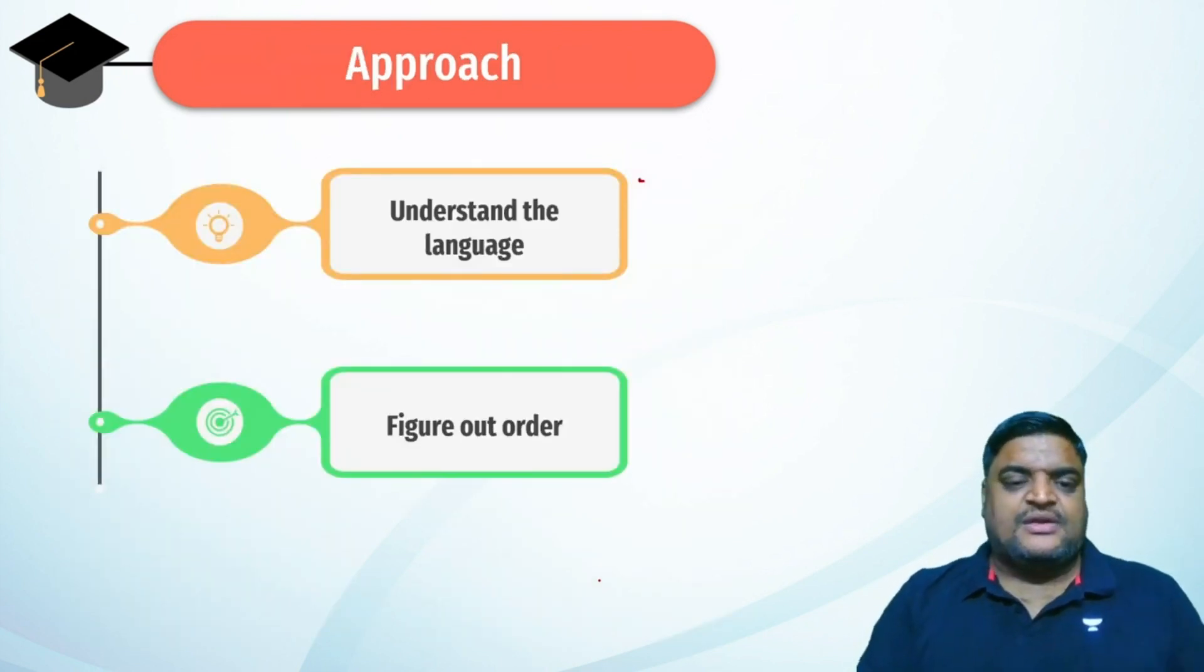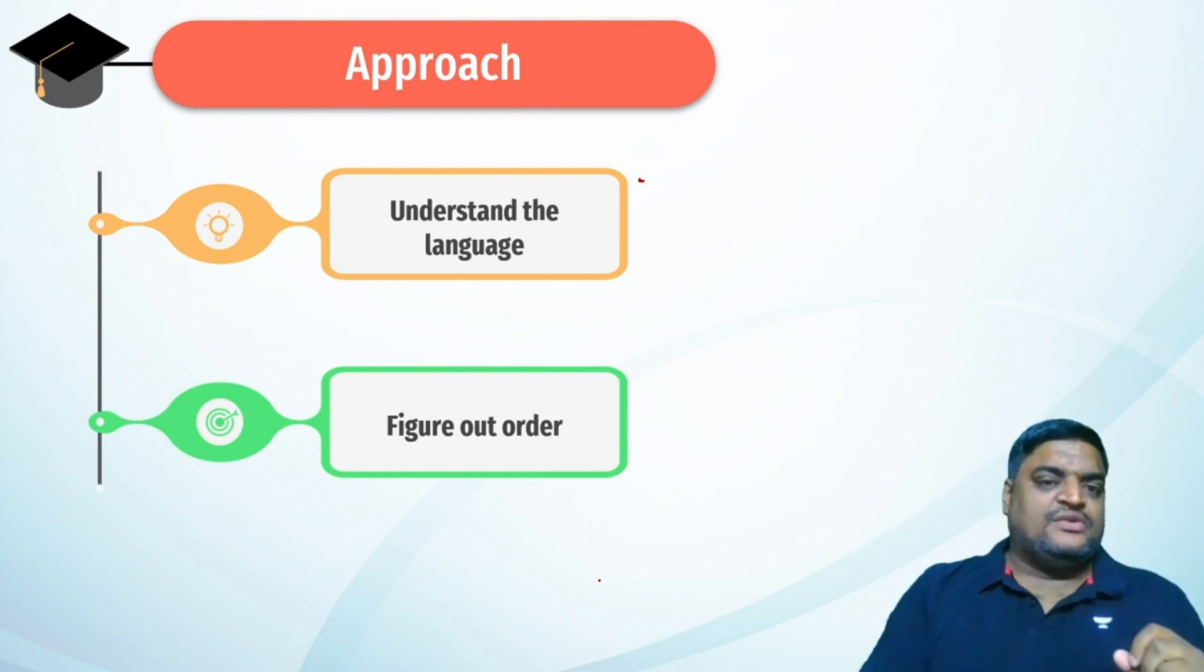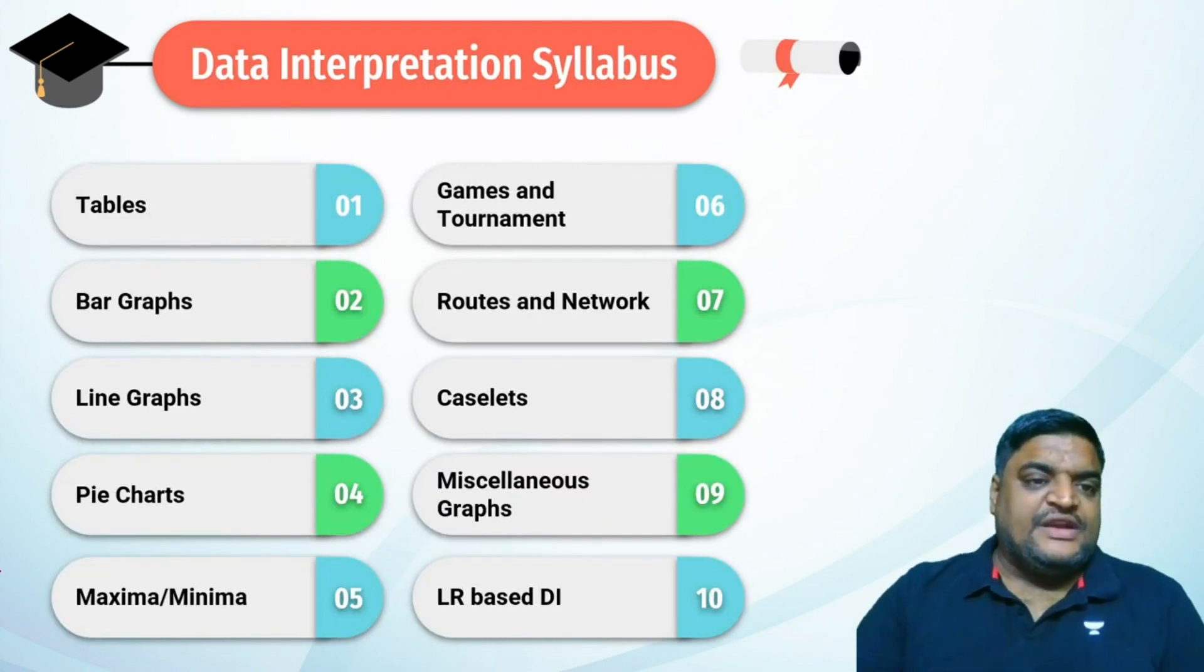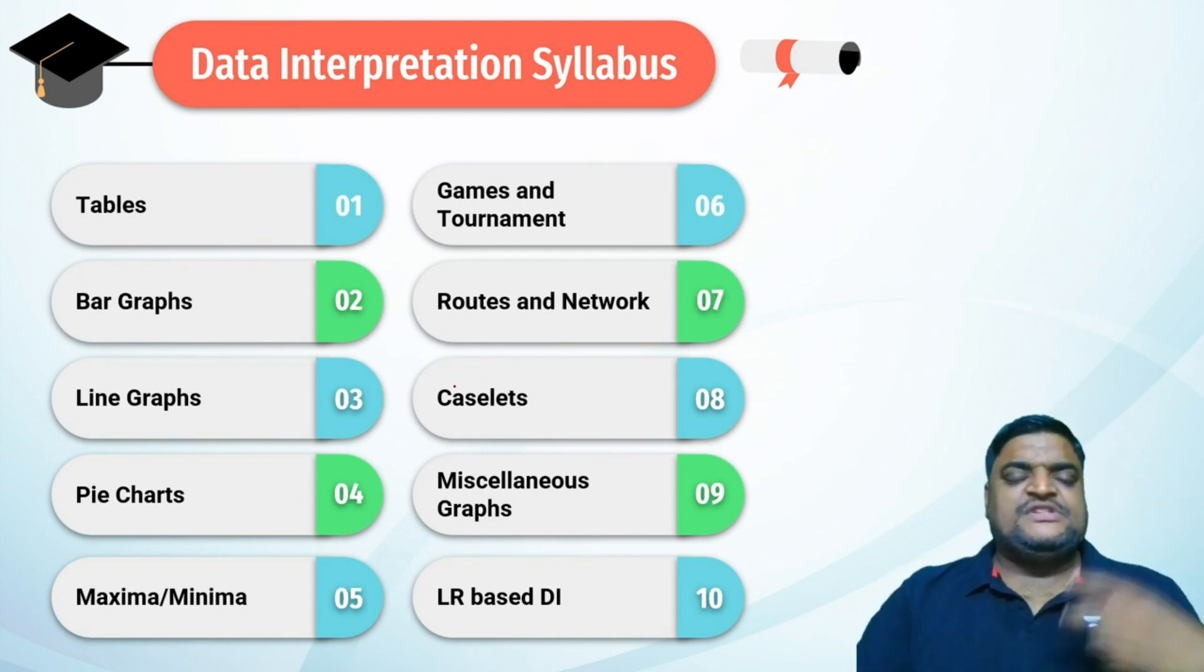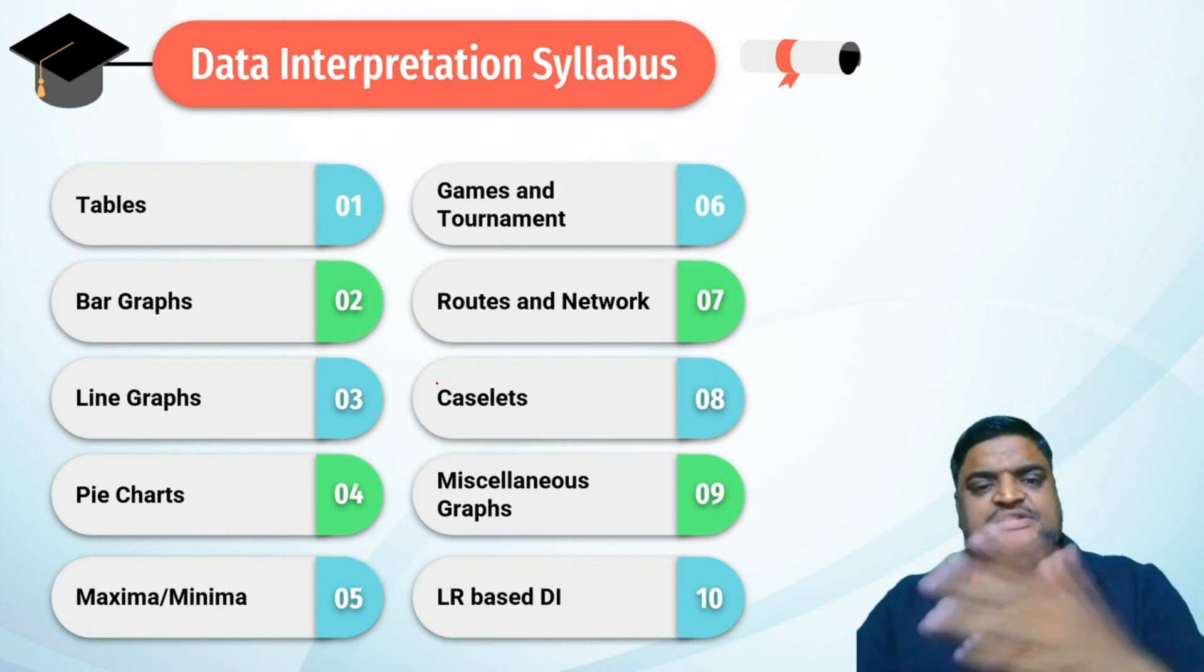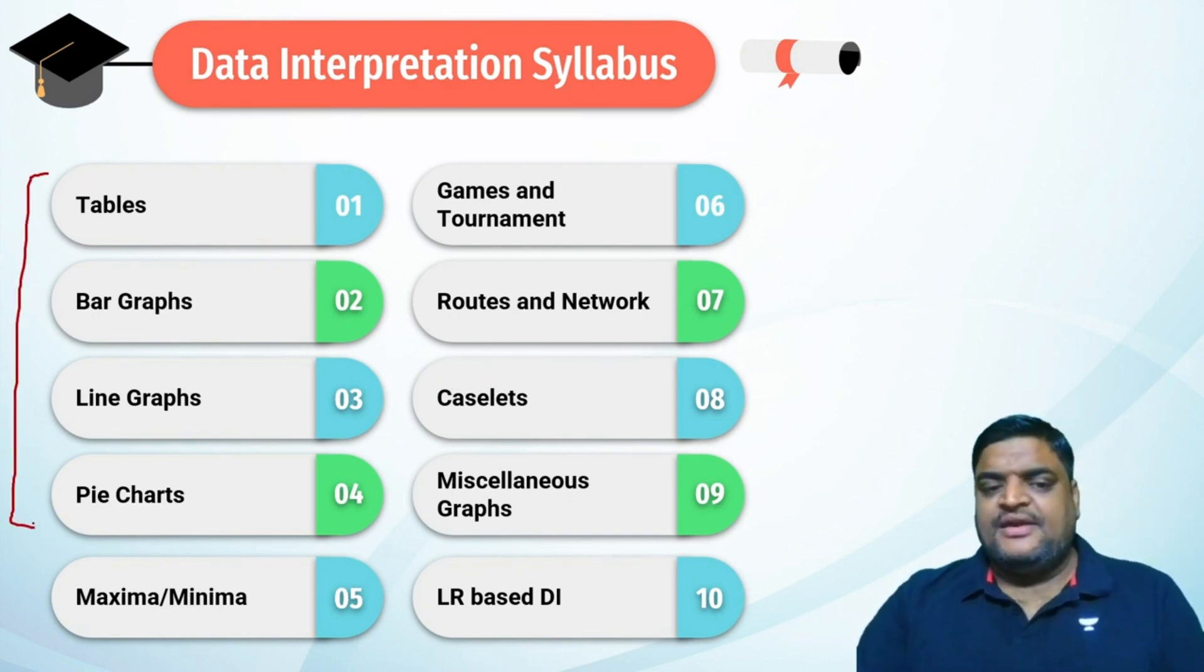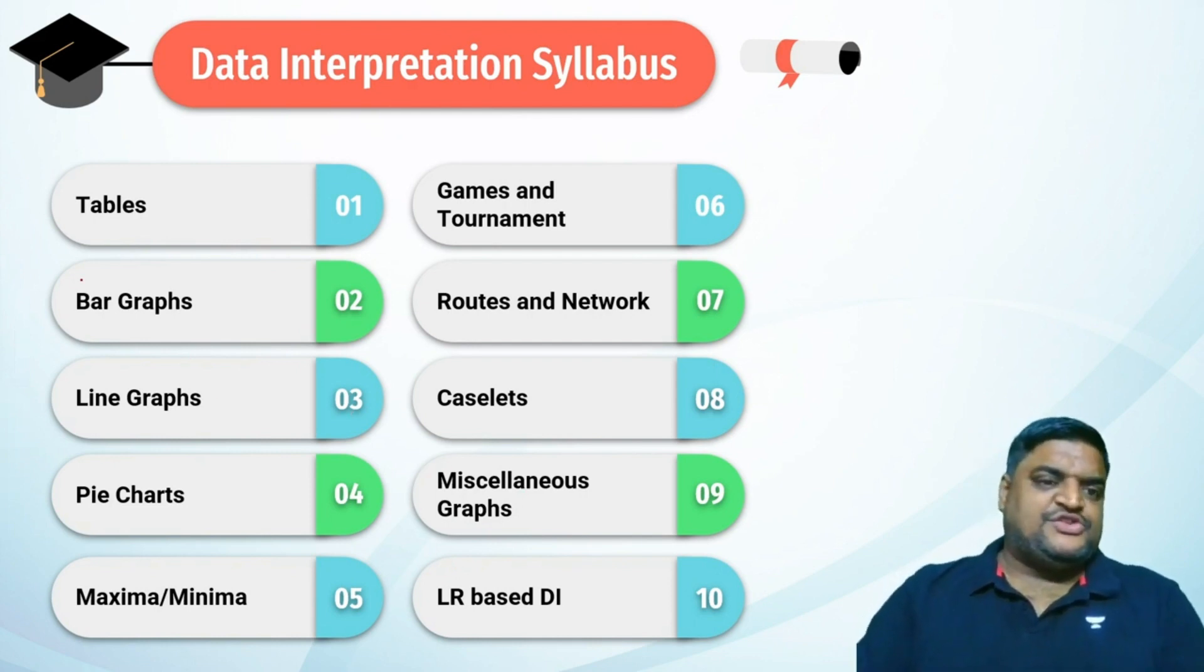Moving ahead, data interpretation has the same problem - syllabus is unknown. The syllabus is mainly divided into two parts: first is traditional DI and the remaining six topics are modern or logical DI.